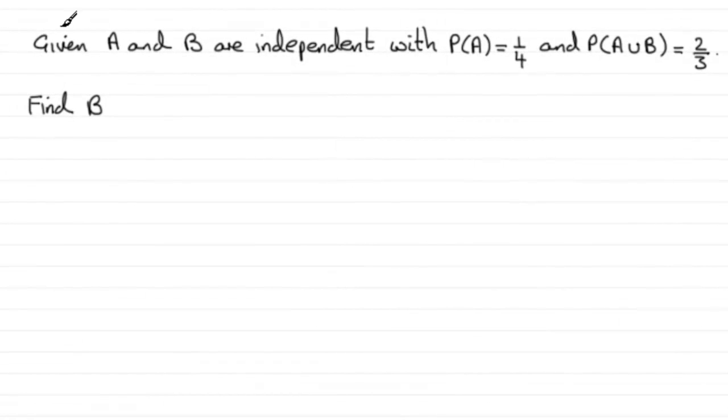Now for this next part we're given that A and B are independent events and we've also got the probability of A equals a quarter and the probability of A union B equals two thirds. We've got to find the probability of B.